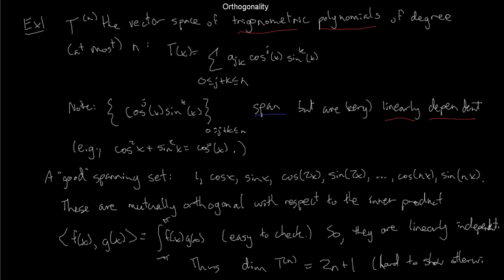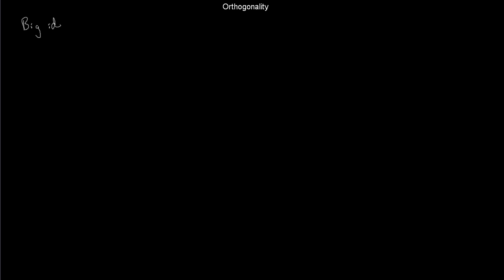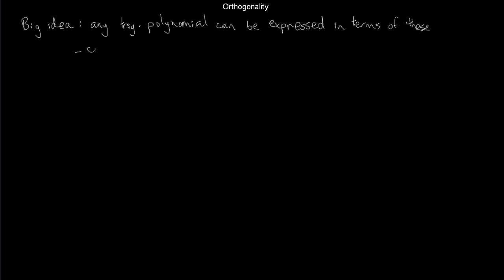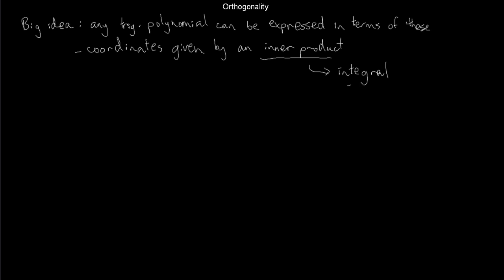Any trigonometric polynomial can be expressed uniquely in terms of this basis — the 1, cos(x), cos(2x), ..., cos(nx), sin(x), sin(2x), ..., sin(nx). Because those basis functions are orthogonal, the coordinates are given by inner products — and an inner product here is just an integral. So as soon as you can compute integrals, you can express complicated trig functions in terms of this nice simple class.